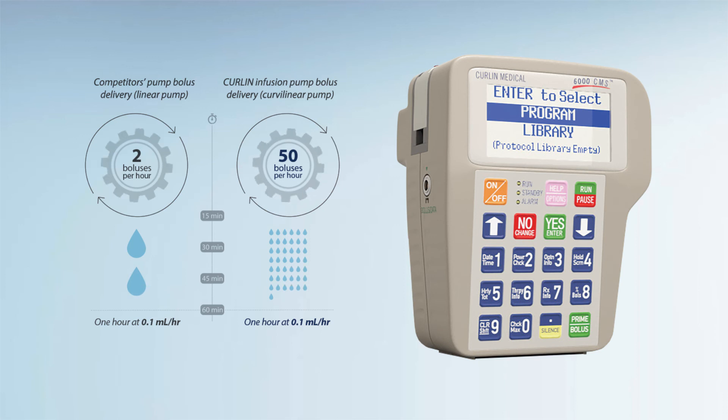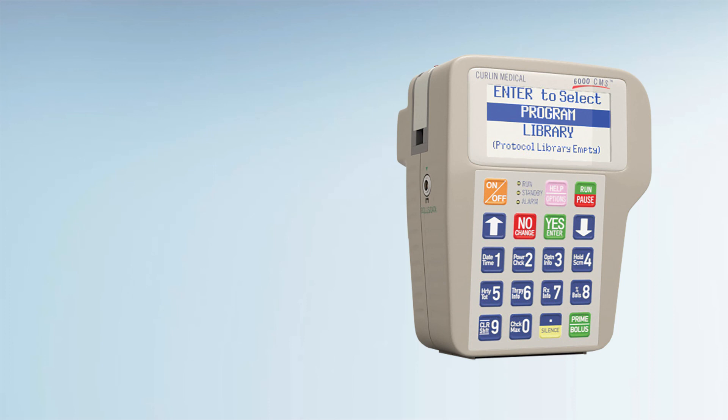This is compared to two boluses per hour with some other infusion pumps. This translates to one bolus every 1.2 minutes with the Curling pump compared to one bolus every 30 minutes with other pumps.